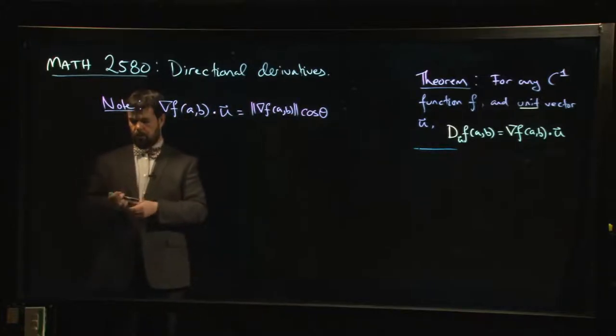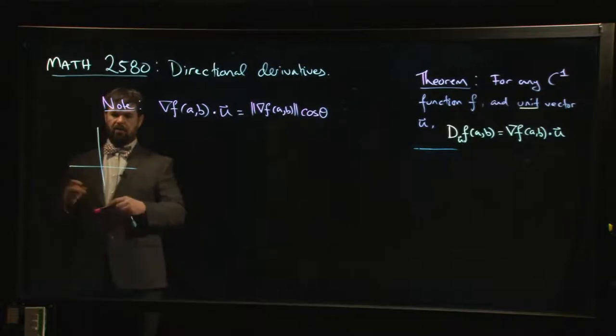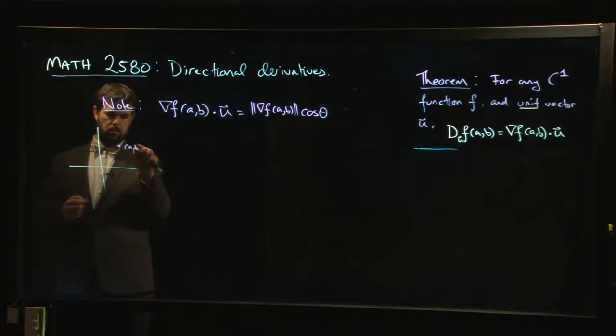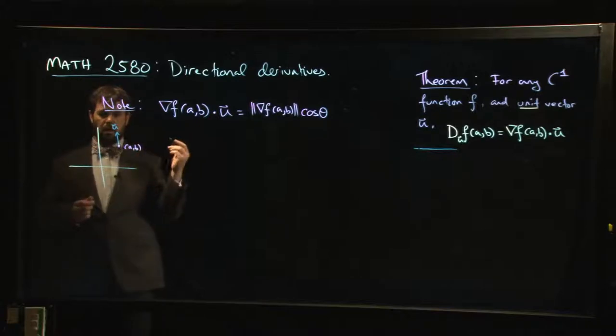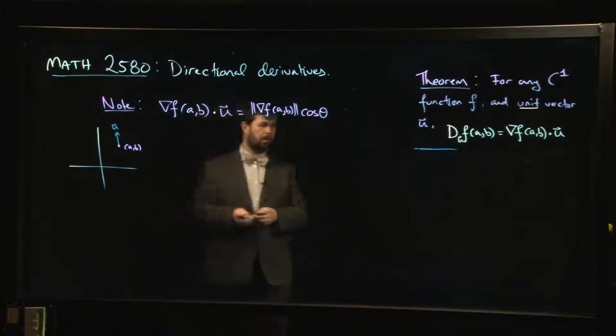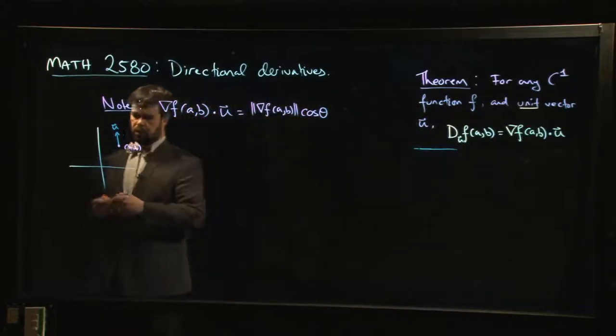And we know from linear algebra, from Math 1410, that I can write the dot product as the magnitude of the gradient times the magnitude of the unit vector, but remember u is a unit vector so the magnitude is one, times cosine of the angle between them.